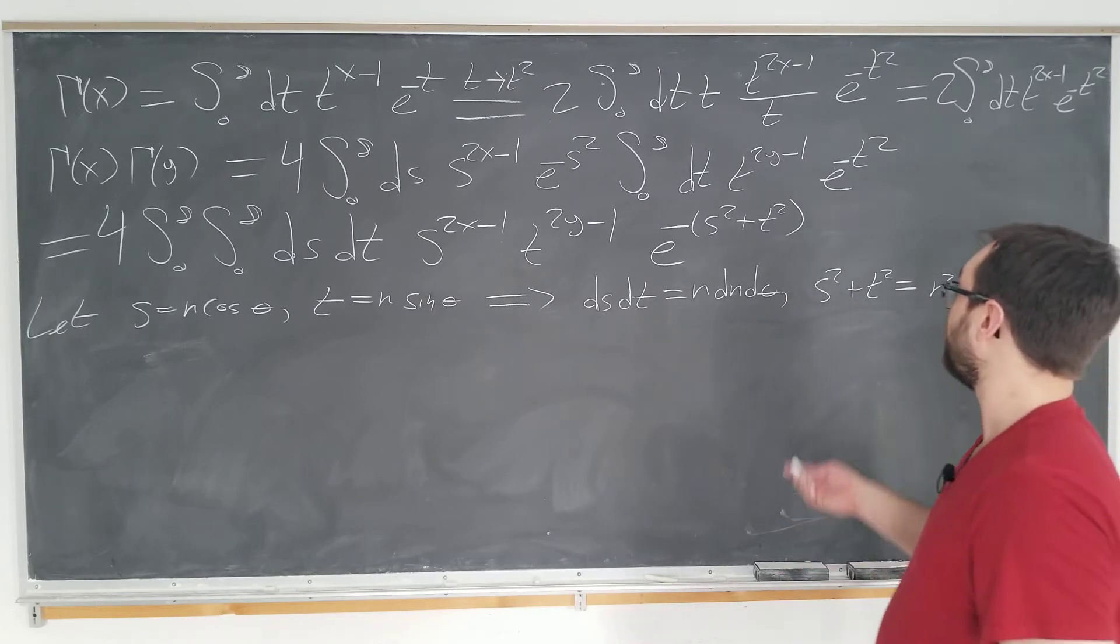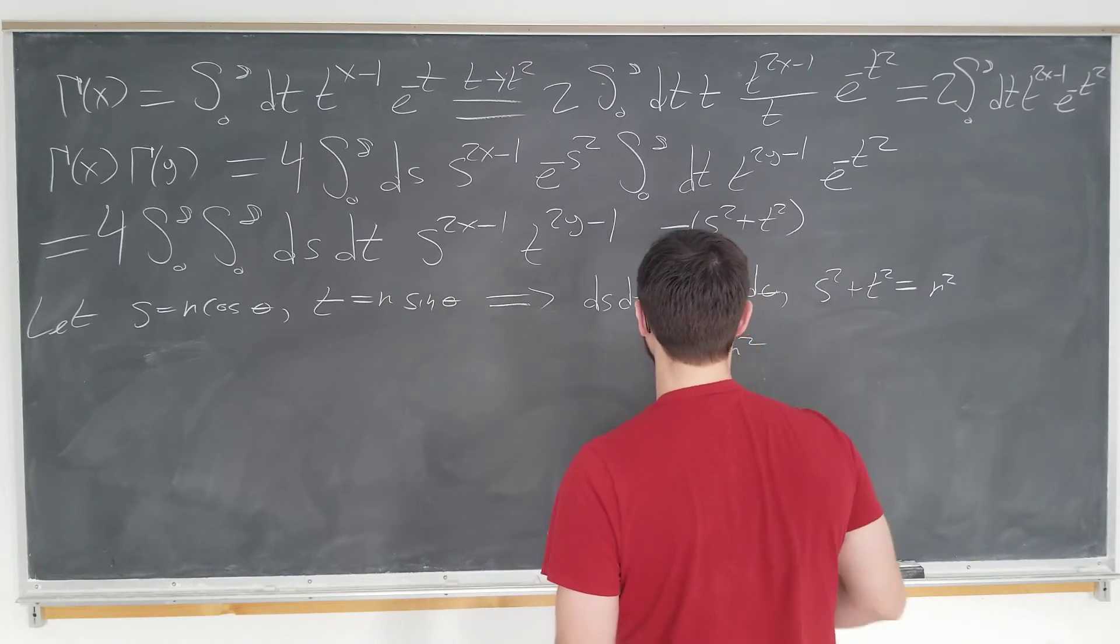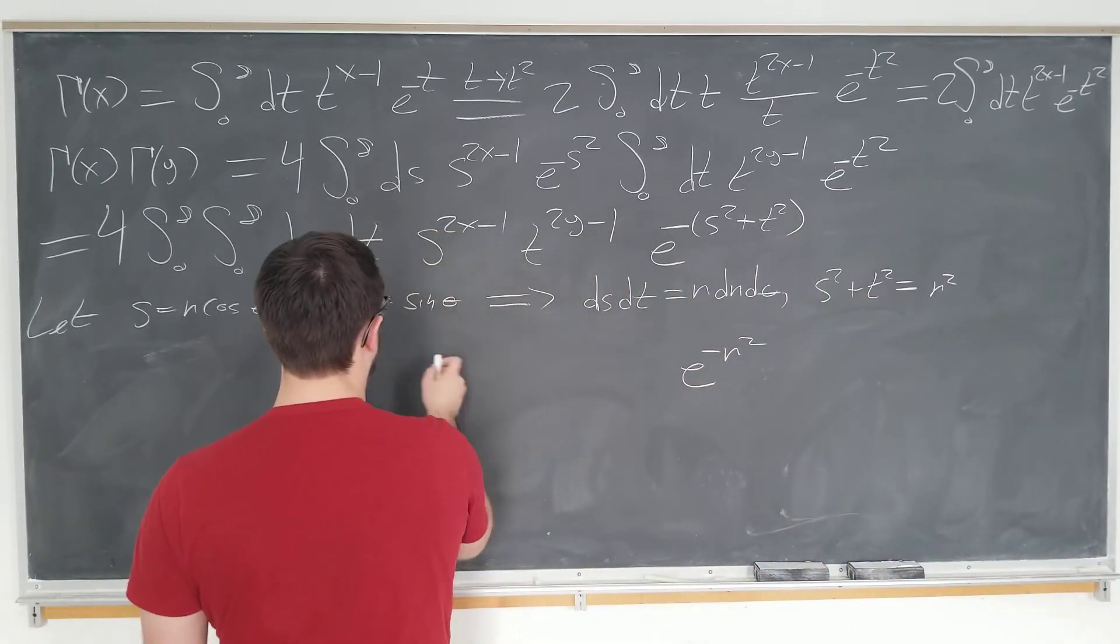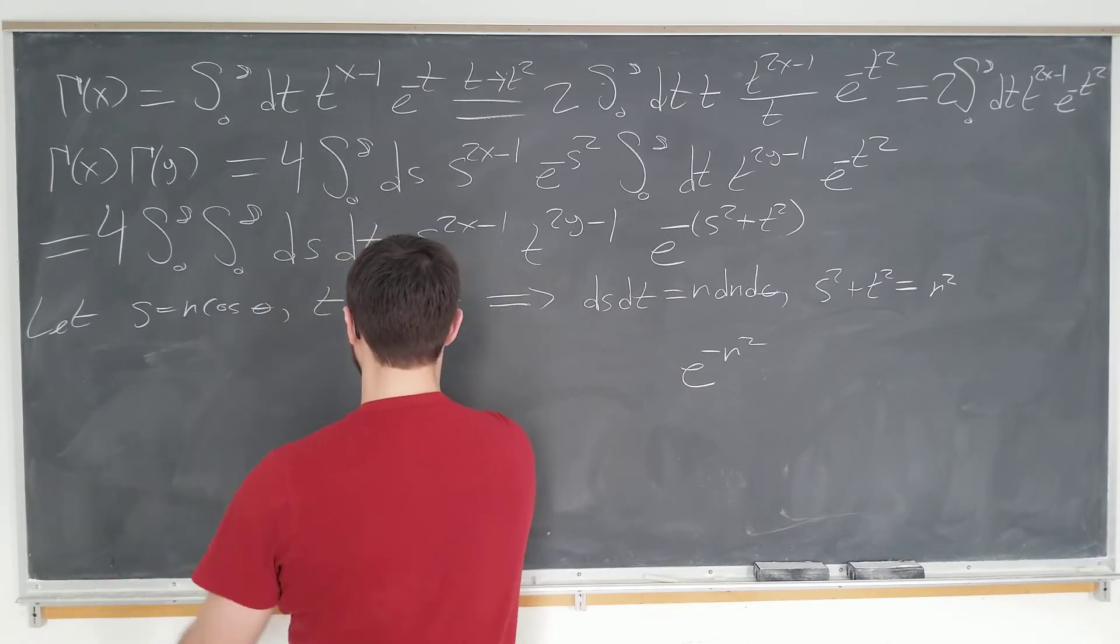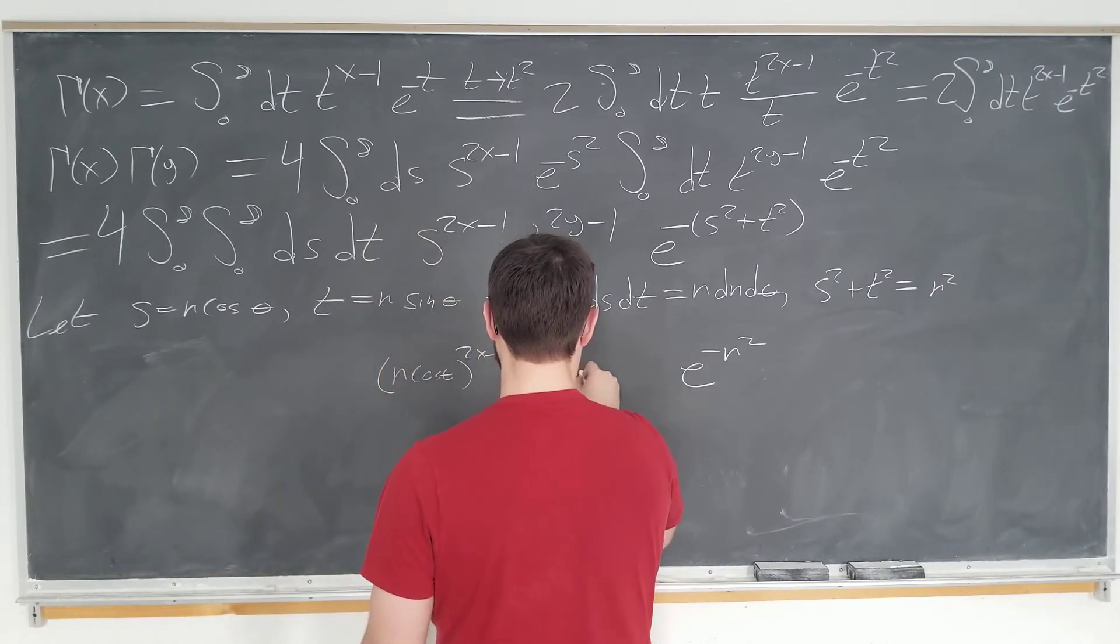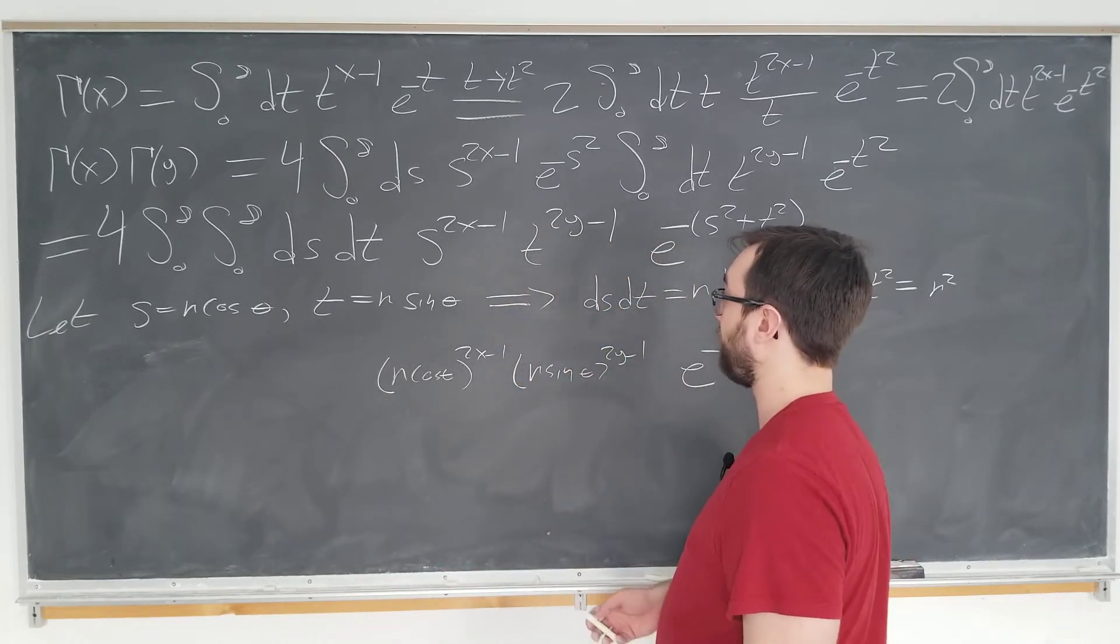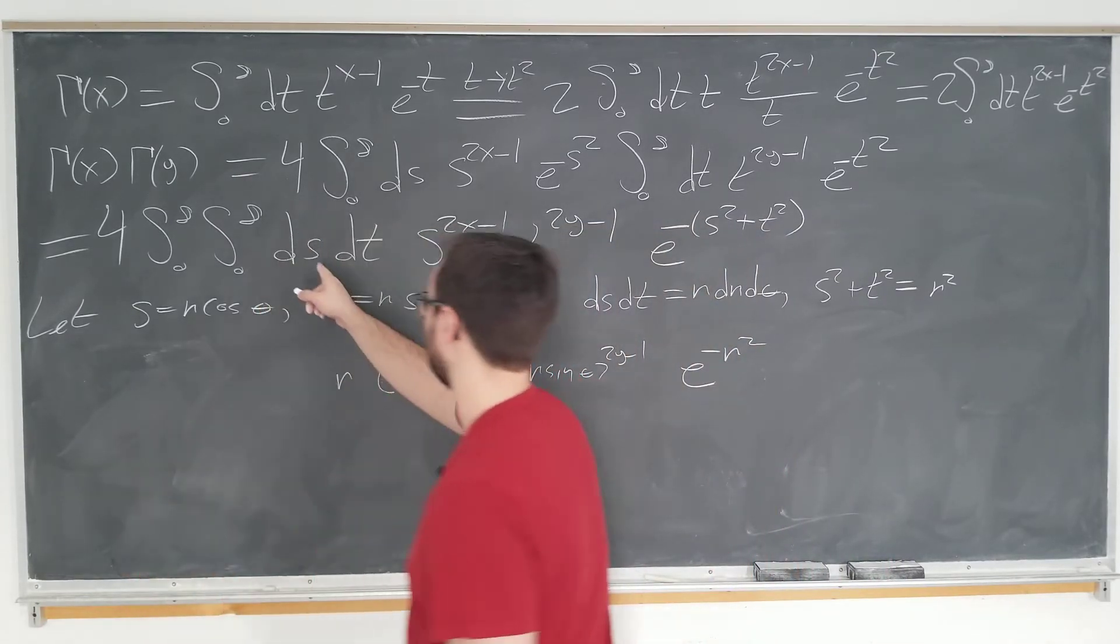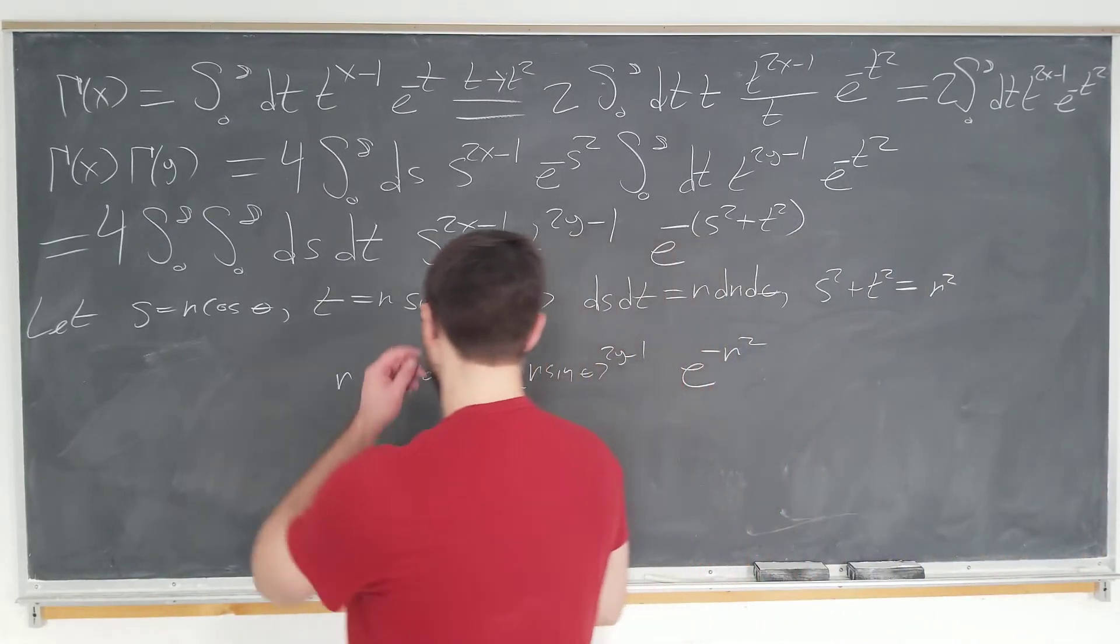Okay, polar coordinate transformation. So we have this bad boy, just going to be written as e to the minus r squared, the exponential term. And then we're going to have this term here written as, well, s is r cosine theta to the 2x minus 1, and t is r sine theta to the 2y minus 1. So, this just becomes also, we have an extra factor of r out front, because ds dt is r, dr d theta.